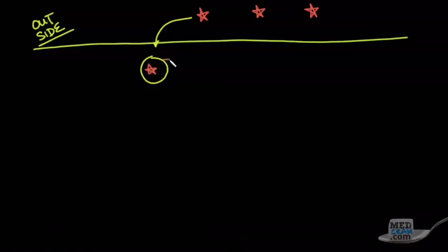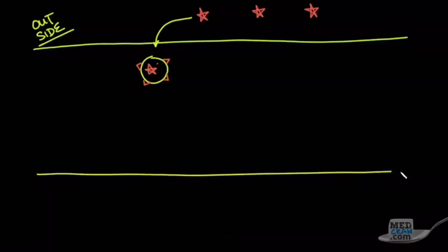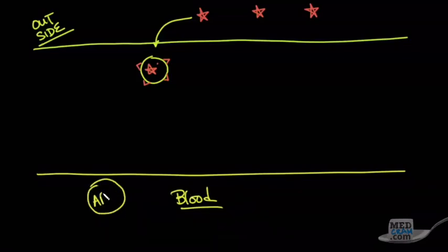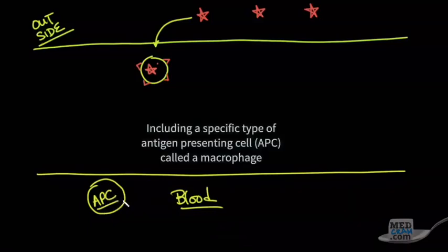When you see a virus, understanding the virus is very important. This involves the use of a cell device where two people have to produce the response. An endogenic cell device will be used to test them, including a swab, which is different than the standard price. This cell device is similar to BMI.